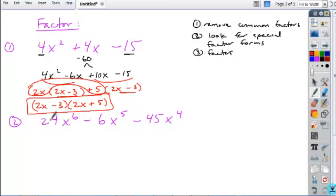Yeah. So what common factors can you remove numerically from 24, negative 6 and negative 45? We can take out a 3 and then the variables we can take x to the 4th, whatever the lowest power is.